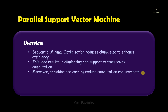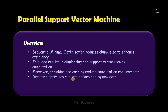When non-bound vectors are eliminated, the optimization process becomes more efficient. The kernel function is a key component in SVM training as it computes the similarity between data points in a higher-dimensional feature space. For larger data sets, kernel function evaluation can be computationally expensive, and that is why the caching method is used. Caching involves storing kernel function evaluations for previously processed data points so they can be reused instead of recomputed from scratch, avoiding redundant computations and reducing overall computation time.